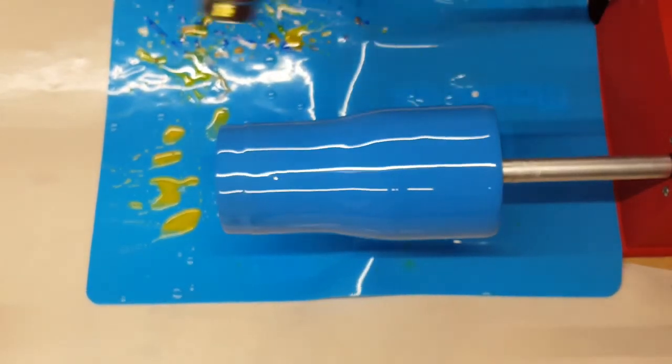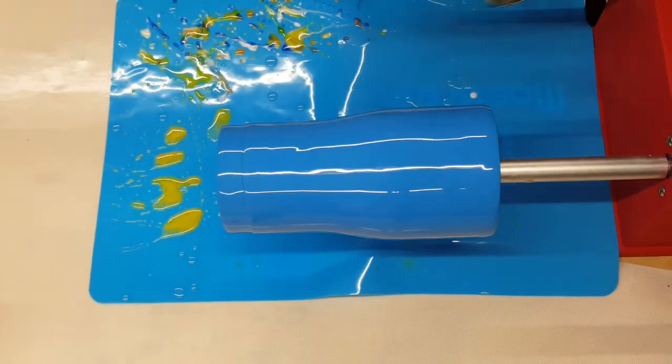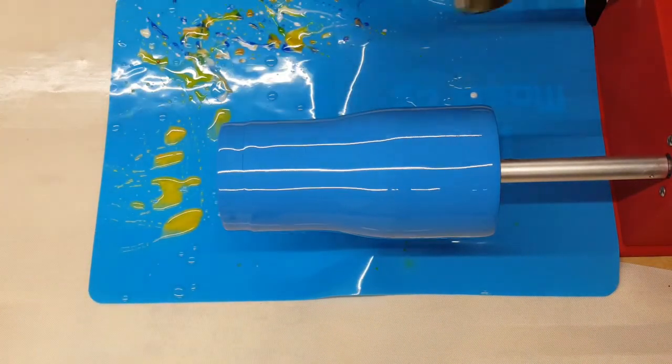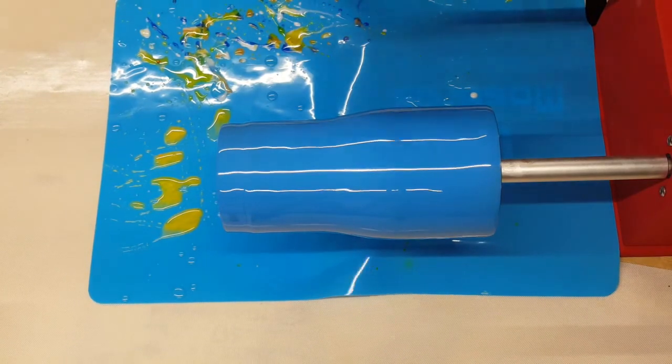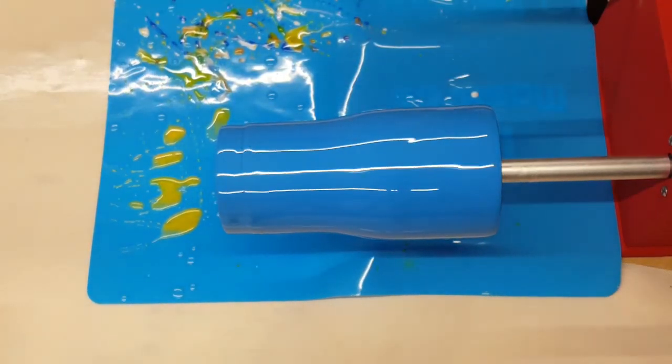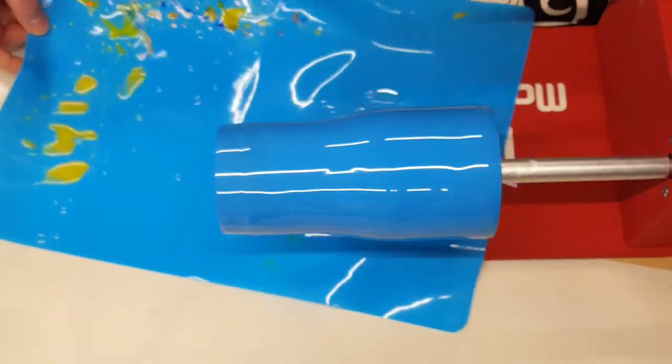So then I just put a clear coat of epoxy on here, hitting it with my heat gun to get any bubbles, smooth it out, and then I'm going to come in with my glitters.